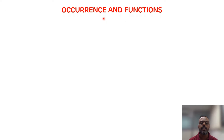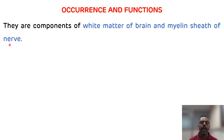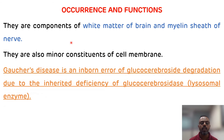Regarding the occurrence and functions of cerebrosides: they are components of the white matter of the brain, present in the myelin sheath of the brain, and are also important constituents of the cell. Gaucher's disease is an inborn error of glucocerebroside degradation due to the inherited deficiency of glucocerebrosidase, which is a lysosomal enzyme.